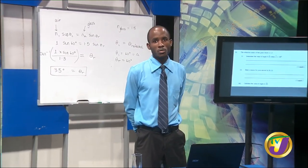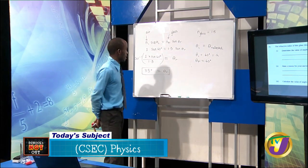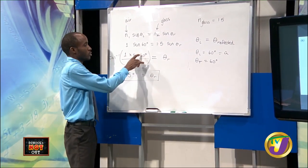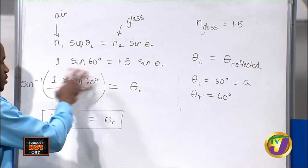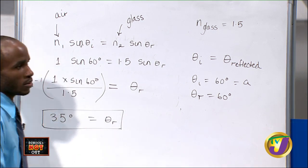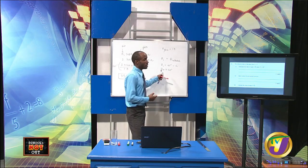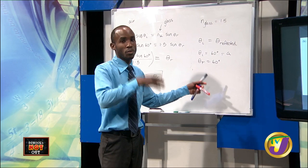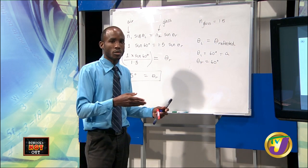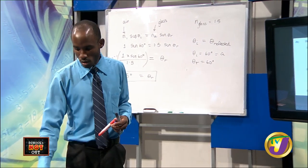Welcome back to Schools Not Out, where we are discussing CSEC Physics. During the break, I used my calculator and found the answer to be 35 degrees. This works out to 0.866 divided by 1.5; taking the sine inverse gives 35°. This is consistent with what we've been discussing: the angle of incidence was 60°, moving from less dense to more dense, so the angle should be less — bending towards the normal. Starting with 60°, we end up with 35° as the angle of refraction.